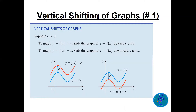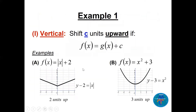Vertical shifting: when we have a graph and need to shift it vertically — up or down. If we have f(x) + c, we shift the graph c units upward. If we have f(x) − c, we shift the graph downward c units. You can see the original graph in blue, shifted up or shifted down.